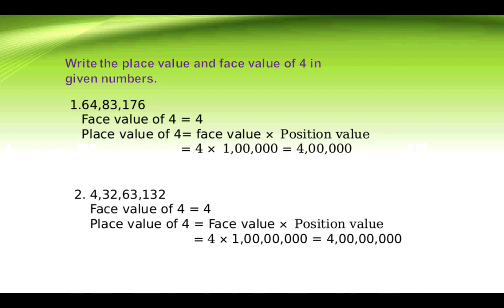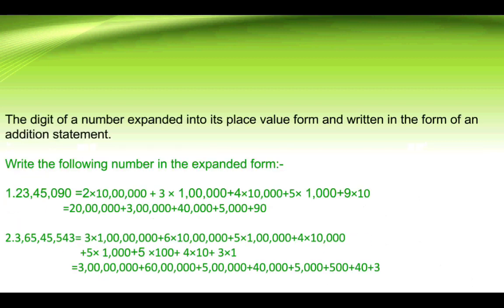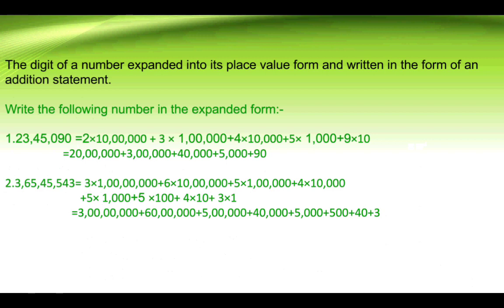Write the following numbers in expanded form. First number: 23,45,090 = 2 × 10 lakh + 3 × 1 lakh + 4 × 10 thousand + 5 × 1 thousand + 9 × 10, which equals 20 lakh + 3 lakh + 40 thousand + 5 thousand + 90.